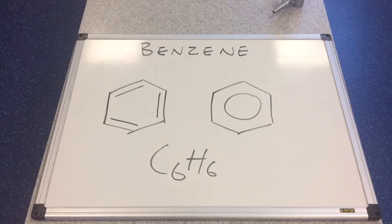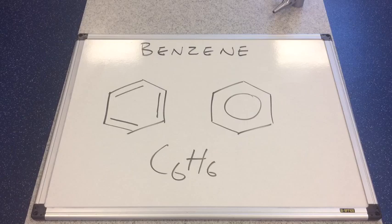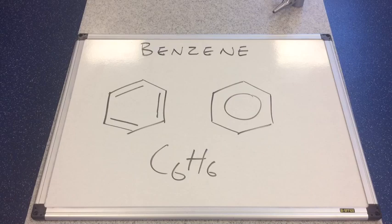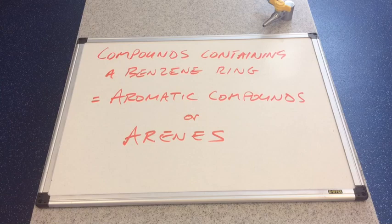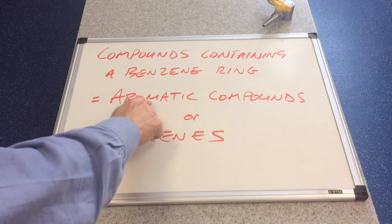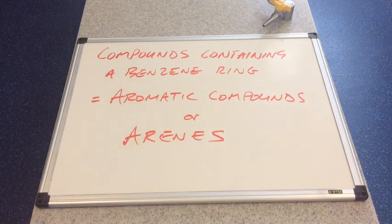In this video I'm going to look at benzene and we're going to look at the development of the structure of benzene and also the bonding in the benzene molecule. It's worth saying that compounds containing a benzene ring are referred to as aromatic compounds. They're also referred to as arenes. So if you see these words you're dealing with a compound that contains at least one benzene ring.